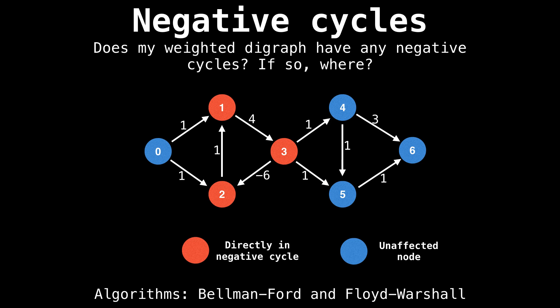This is something we can use graph theory for because it uses detecting negative cycles. There are two well-known algorithms that can detect negative cycles and those are Bellman-Ford and Floyd-Warshall.